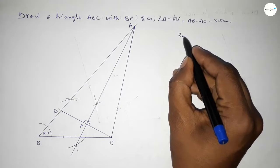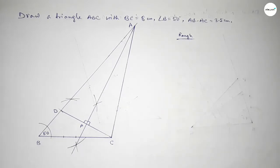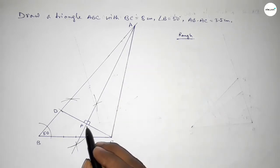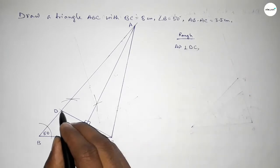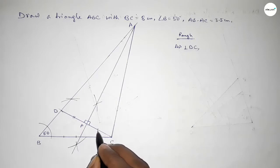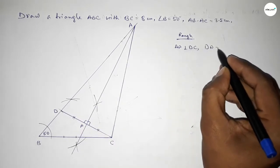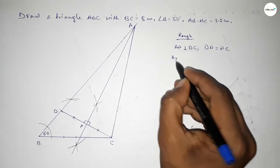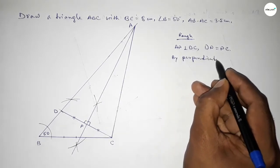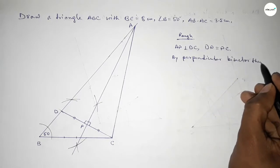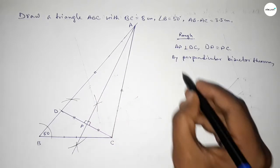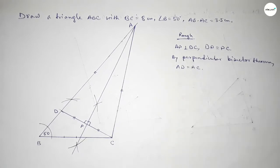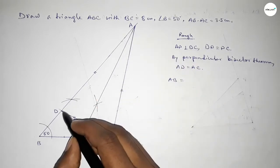Now discussing the proof: AP is perpendicular to DC, and since P bisects DC equally, DP equals PC. By the perpendicular bisector theorem, we can say that AD equals AC.